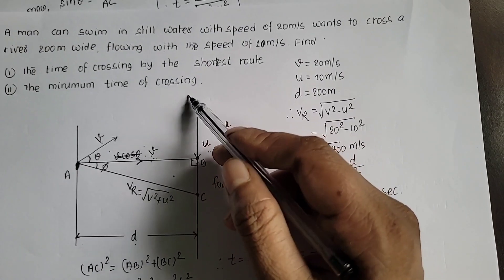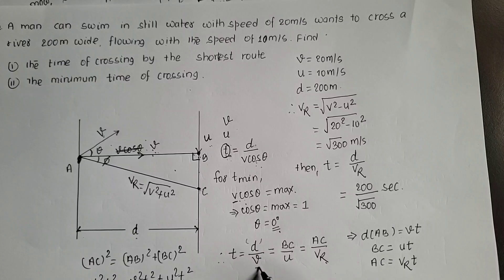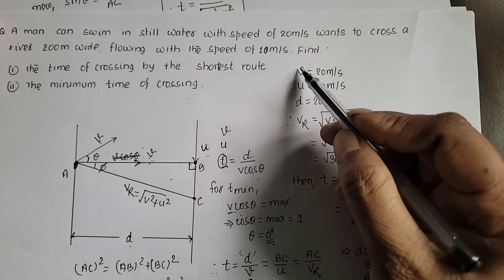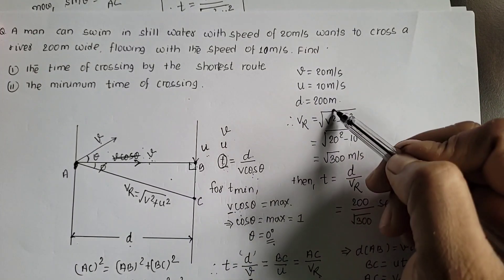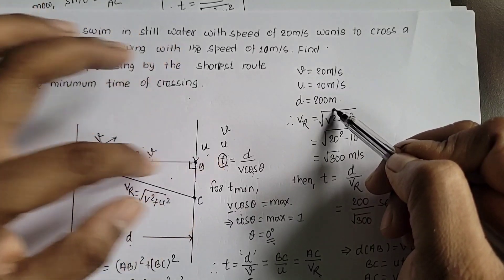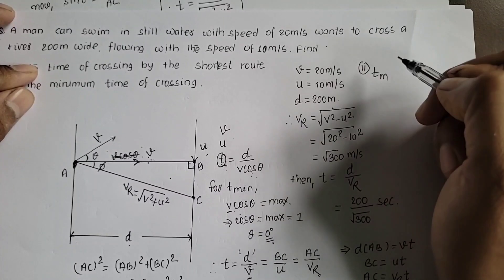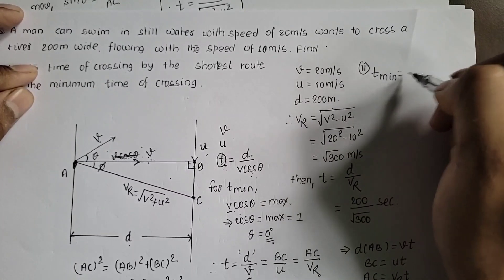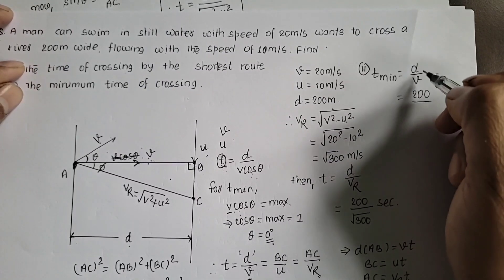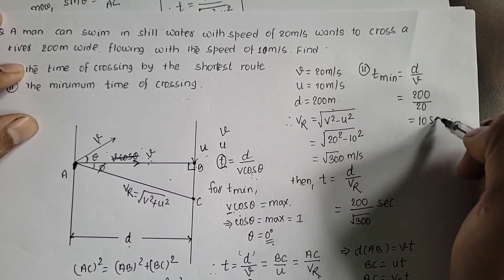For minimum time, the swimmer swims directly across with velocity V perpendicular to the bank. Minimum time t_min = D / V = 200 / 20 = 10 seconds.